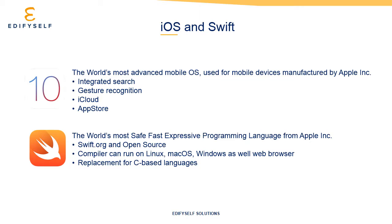Swift was designed from the outset to be safer than C-based languages and eliminates entire classes of unsafe code. Variables are always initialized before use, arrays and integers are checked for overflow, and memory is managed automatically. Swift is the world's first language which allows the use of symbols and emojis in code, like as a variable name or value.